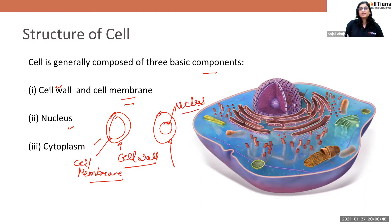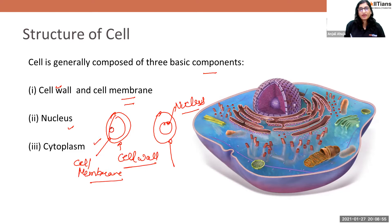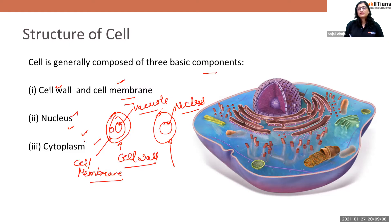One thing to remember: in plant cells, the nucleus is not present at the center. In animal cells, the nucleus is present at the center, but in plant cells the nucleus is present at the periphery because most of the space is taken up by the vacuole. That's the difference. But the basic structure is: cell membrane, nucleus, and cytoplasm.